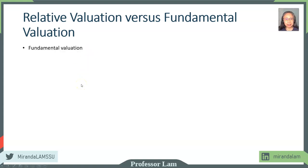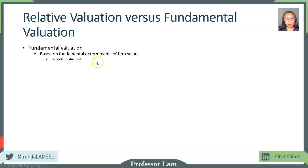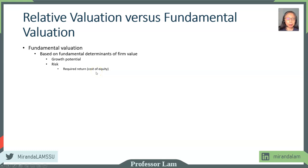So what's the difference? In fundamental valuation, the value of the firm is based on the fundamental determinants. Those determinants are the growth potential of the firm and the risk associated with the firm, which is expressed through the required return. And if you're looking at it from a common shareholder perspective, there will be the cost of equity. Remember that risk includes the systematic risk, which includes both the business and financial risk associated with the firm.